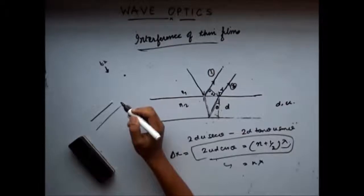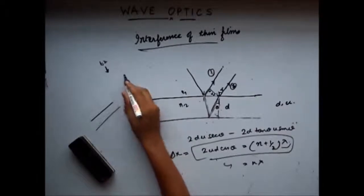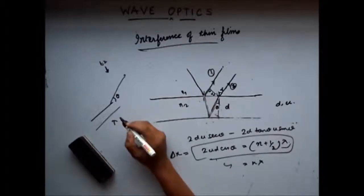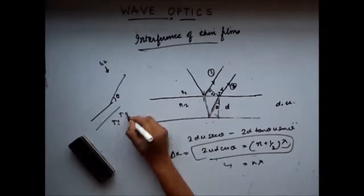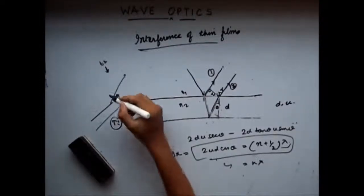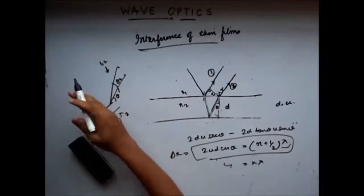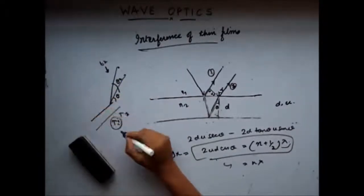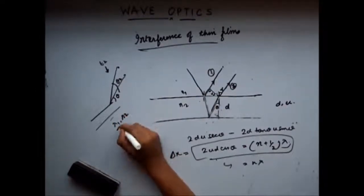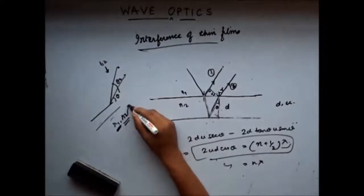For some lambda we get destructive interference. For example, at a viewing angle theta, for a particular wavelength λ1 I get constructive interference, and for wavelength λ2 I get destructive interference. So at this point I will only see colours with wavelength λ1. Now if I change my viewing angle to theta 2, the path difference changes such that λ1 now has destructive interference and λ2 has constructive interference, so we will see the colour corresponding to λ2.